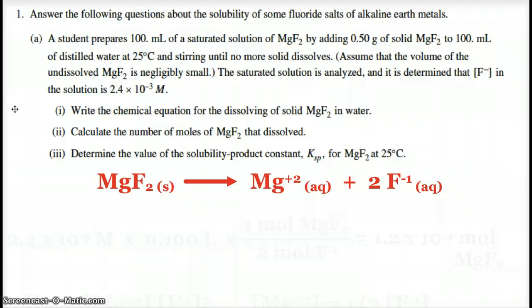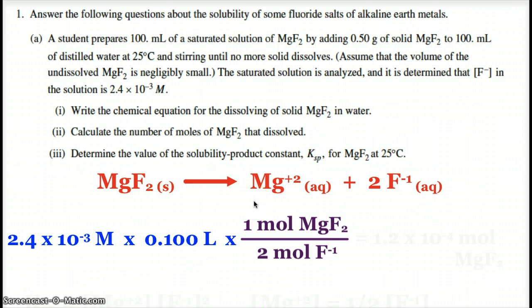Now it wants us to calculate the number of moles of magnesium fluoride that dissolved. Alright, and so what we can do here is we know that the concentration of the fluoride is 2.4 times 10 to the negative third molar. And we have 100 mils, so when we multiply that, we're going to get the moles of fluoride that dissolved. Then when we use the ratio, 2 moles of fluoride came from the 1 mole of magnesium fluoride. That will tell us how many moles of magnesium fluoride dissolved.